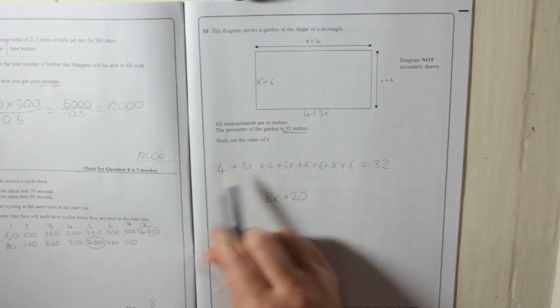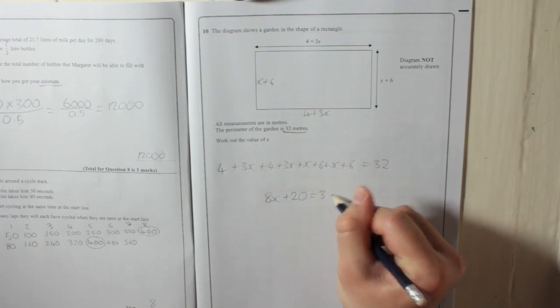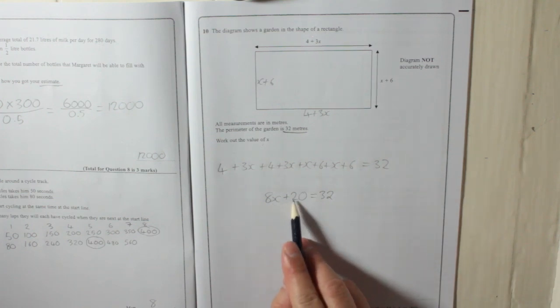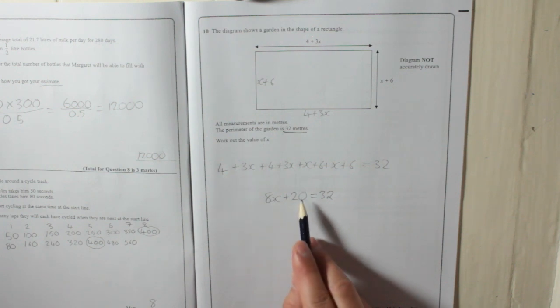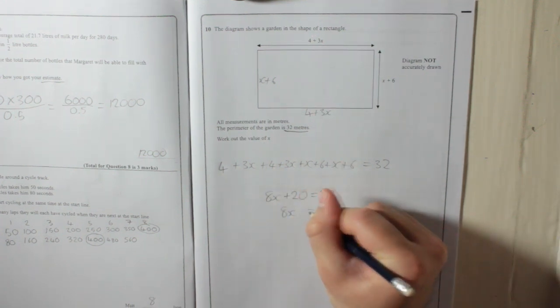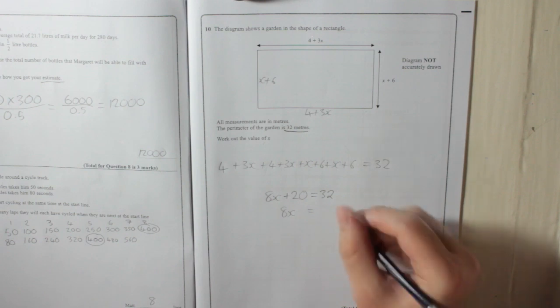So, 8x plus 20 is equal to 32. We've solved that equation, we will find out what x is. You've got 8x plus 20 equals 32. You want to get x on its own, remember. First, what we're going to do is we're going to take that 20 away. It's a plus 20, so to get rid of it, we take away 20. That leaves us with 8x. And on this side, 32 take away 20 is 12.